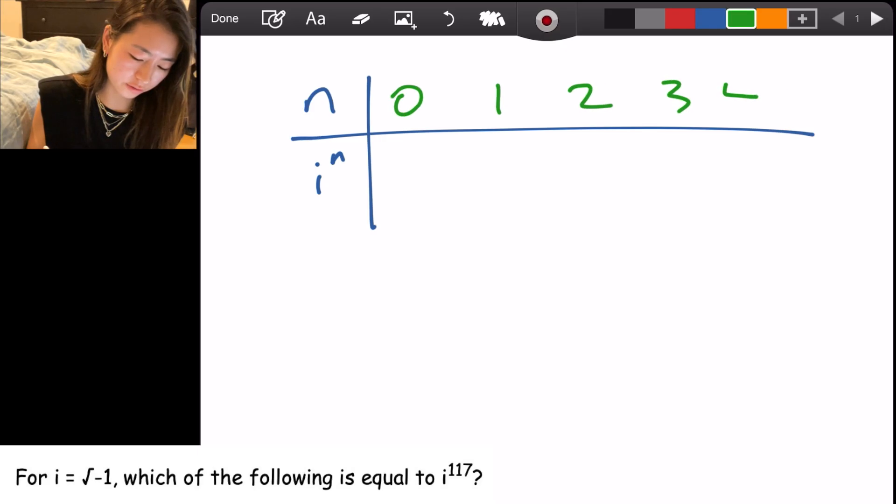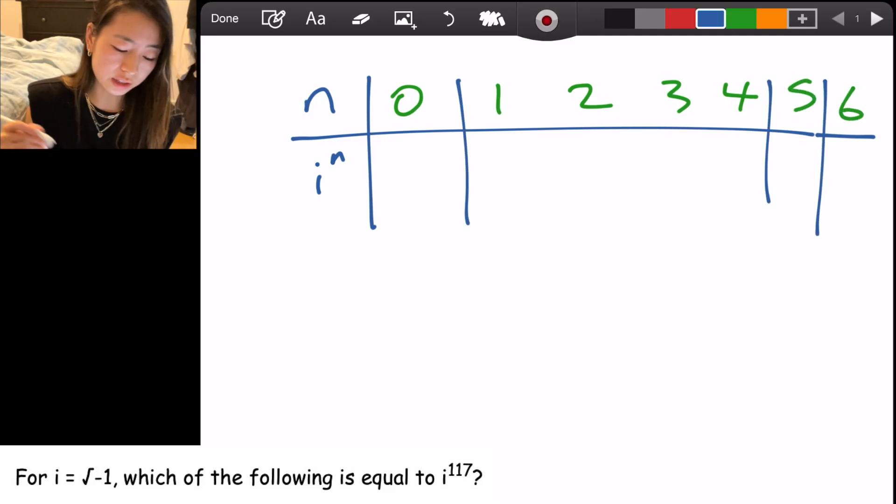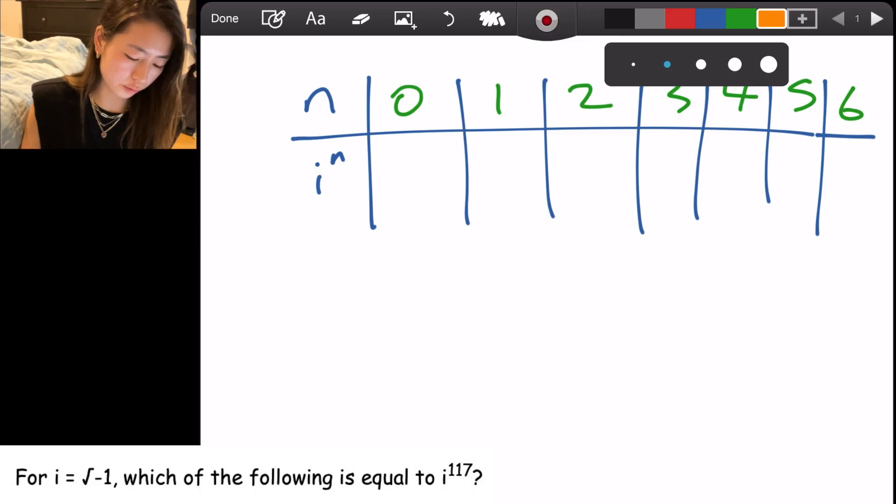3, 4, 5, 6, however many you need to confirm the pattern. So i to the 0 power is 1. i to the 1 power is just i.